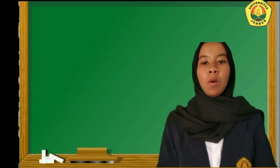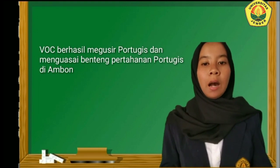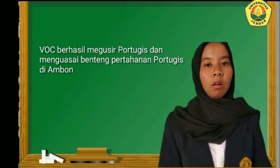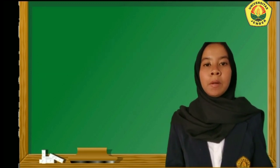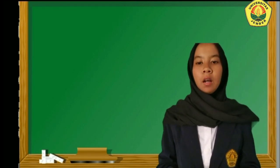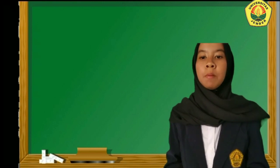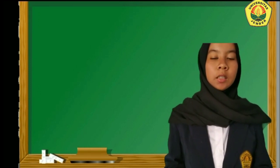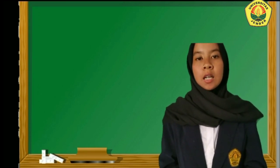VOC mengawali ekspansinya pada tahun 1605 dan berhasil menguasai Ambon dari tangan Portugis. Benteng pertahanan dari Portugis diambil alih oleh tentara VOC dan kemudian diberi nama Benteng Victoria. Pada tahun 1610 secara kelembagaan diciptakan jabatan baru dalam organisasi VOC, yaitu jabatan gubernur jenderal.